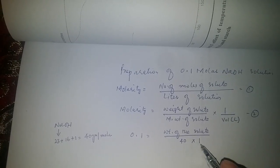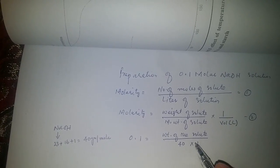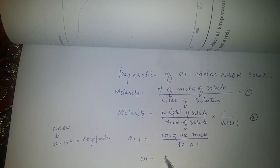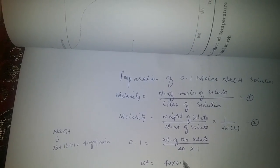Now weight can be determined by multiplying 40 times 0.1, that comes out to be 4 grams.